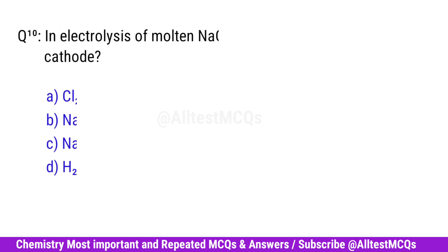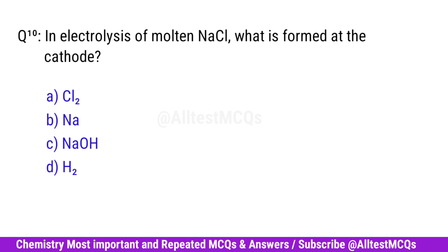Question No. 10. In electrolysis of molten NaCl, what is formed at the cathode? Correct option is B. Na.